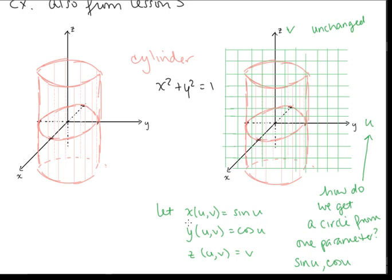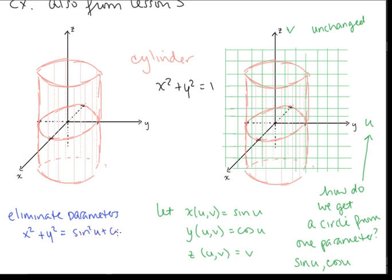Now let's think about going backwards — given this parametrization, how could we find the Cartesian equation for the surface? To eliminate the parameters, we notice we have sine u and cosine u. When we have sine and cosine of the same variable, we square and add them to use the identity sine squared u plus cosine squared u equals 1. So x squared plus y squared equals sine squared u plus cosine squared u equals 1. Having z equals v means z can take any value, which is already clear from x squared plus y squared equals 1.